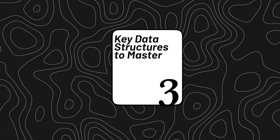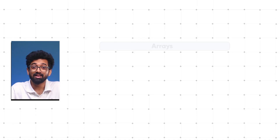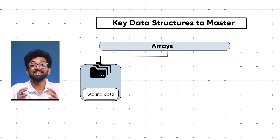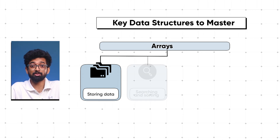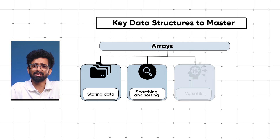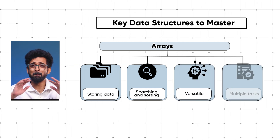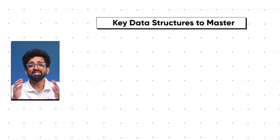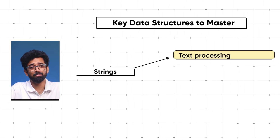Now you need to be equipped with data structures — each has unique uses and strengths. Key data structures to master: arrays are your basic building blocks for storing data in a linear fashion. Practice operations like searching and sorting. Arrays are simple yet versatile and ideal for multiple tasks.